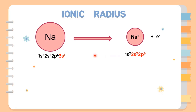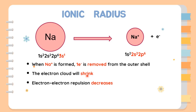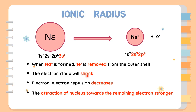Taking one electron out from the parent atom will make the ion smaller. For example, sodium becomes Na⁺. Sodium atom has configurations of 1s², 2s², 2p⁶, 3s¹. To achieve stable octet configurations, one electron is removed from the outer 3s orbital, giving Na⁺ configurations of 1s², 2s², 2p⁶. Removing an electron causes the electron cloud to shrink, decreasing electron-electron repulsions. This makes nucleus-valence electron attractions stronger, so the sodium ion is smaller than the sodium atom.